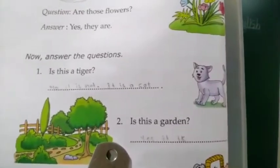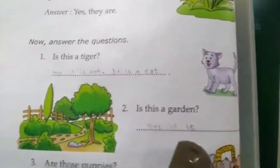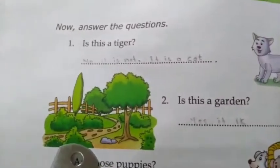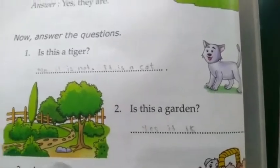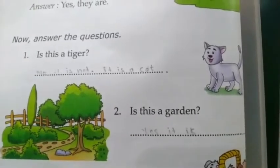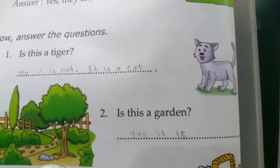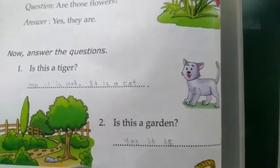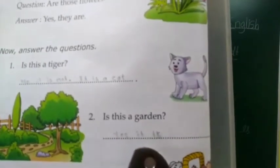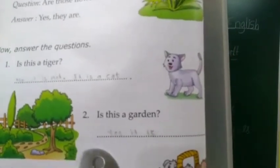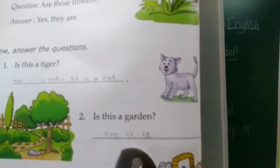Number 2: Is this a garden? Look at this picture. Is this a garden? Ke kaya hai bha? Yes, it is a garden. So, right here: Yes, it is.